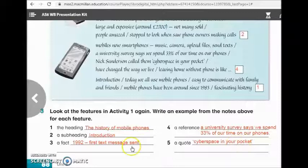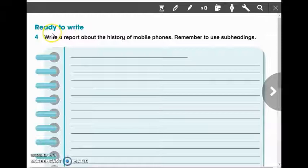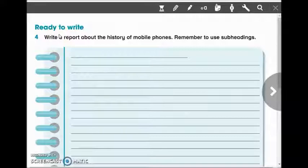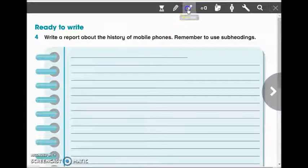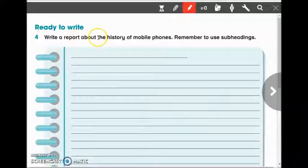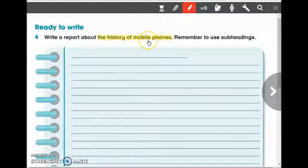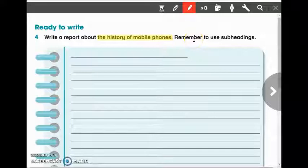Now let's move to the next page, page 89. Now you are ready to write. Let's see. Activity 4. Write a report about the history of mobile phones. So you are going to write a report about the history of mobile phones. Remember to use subheadings.